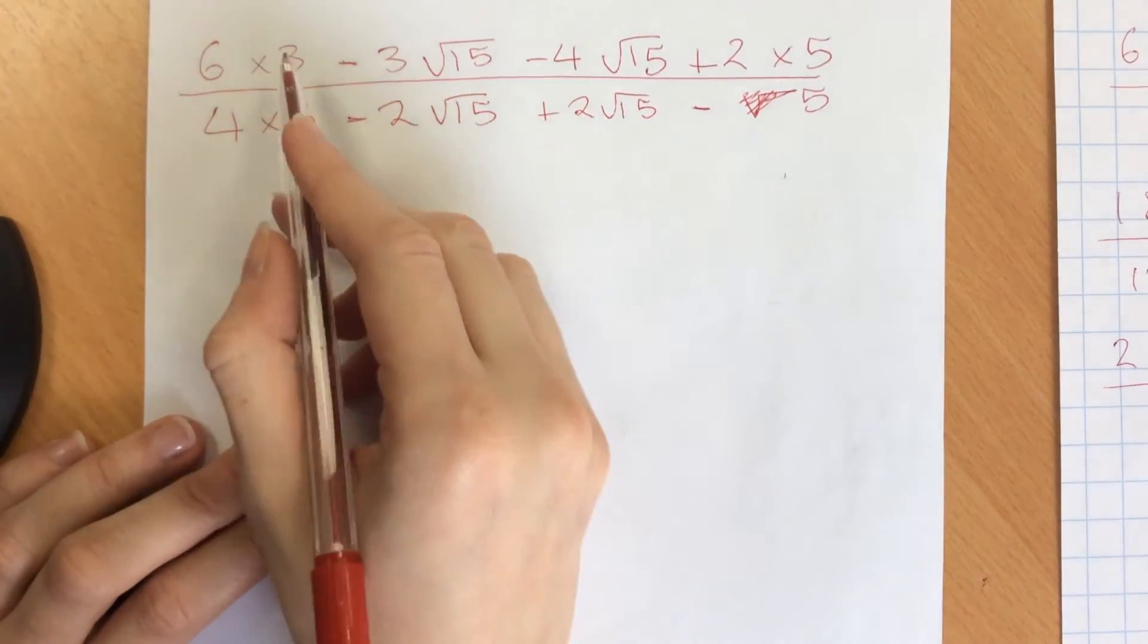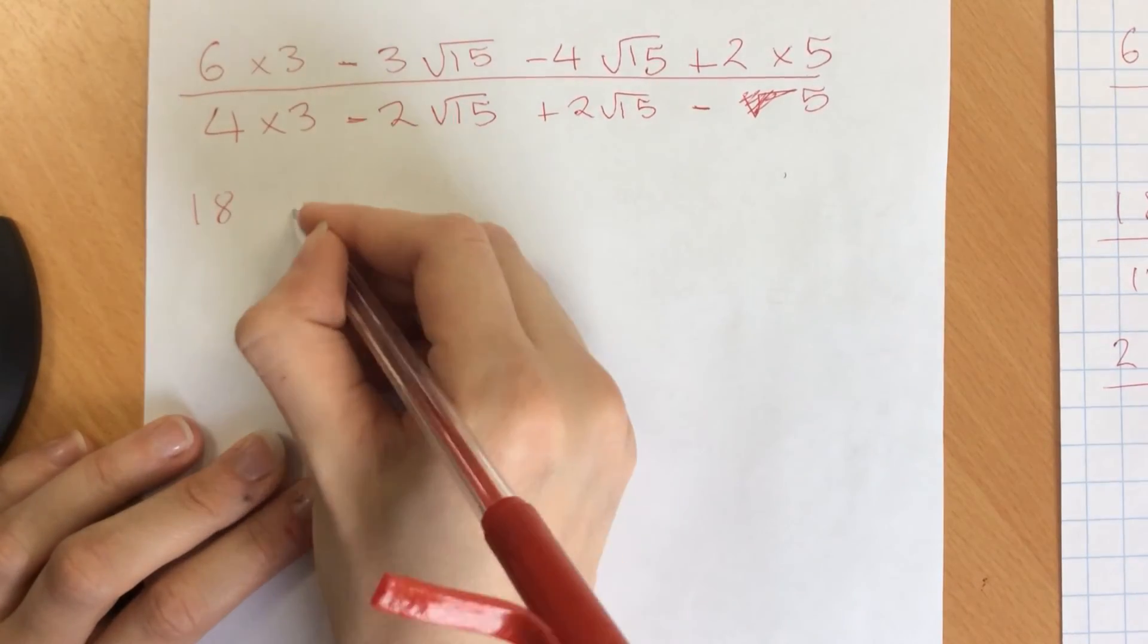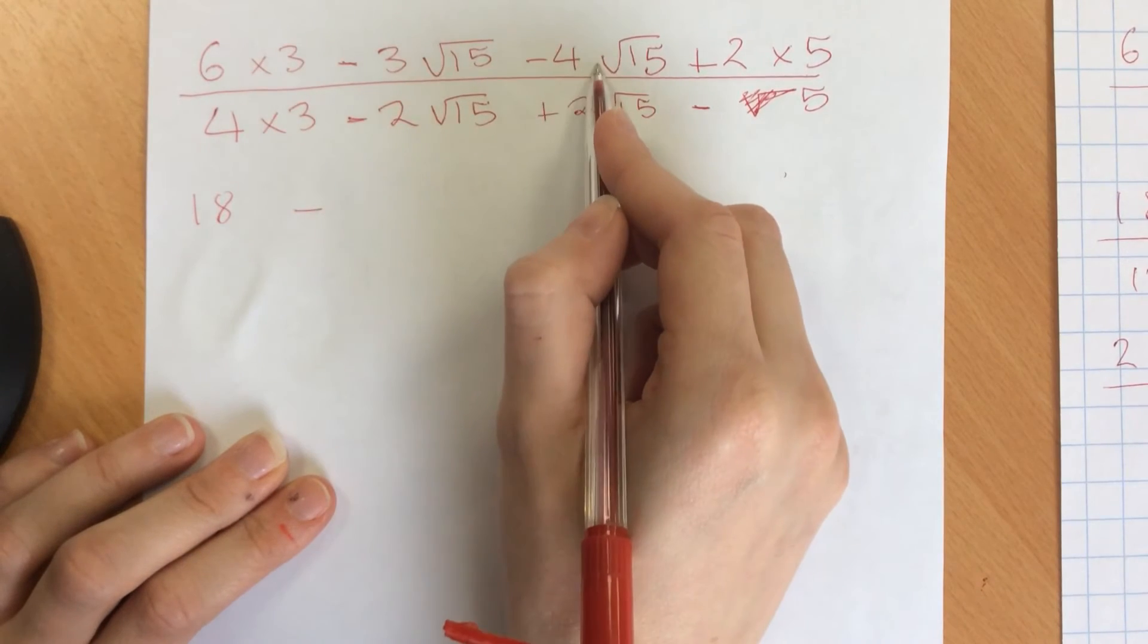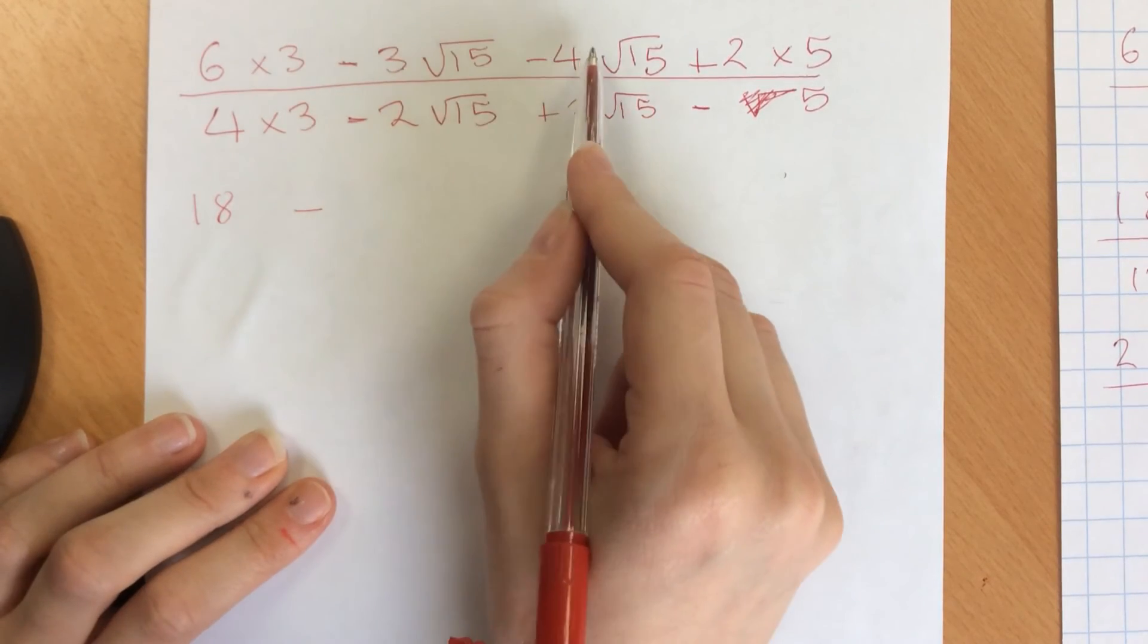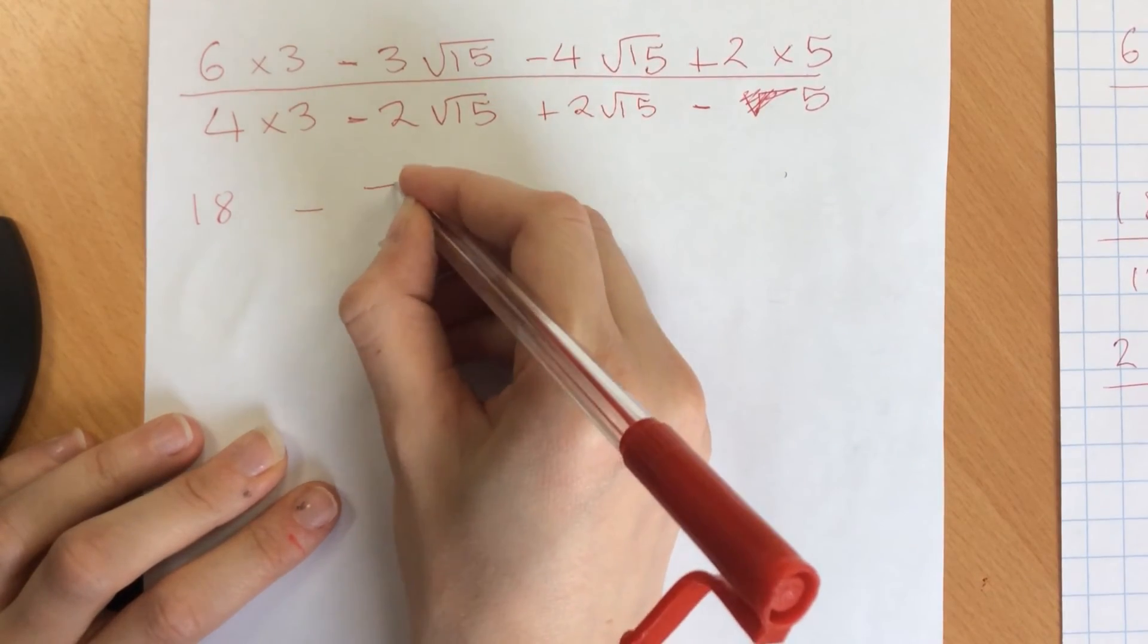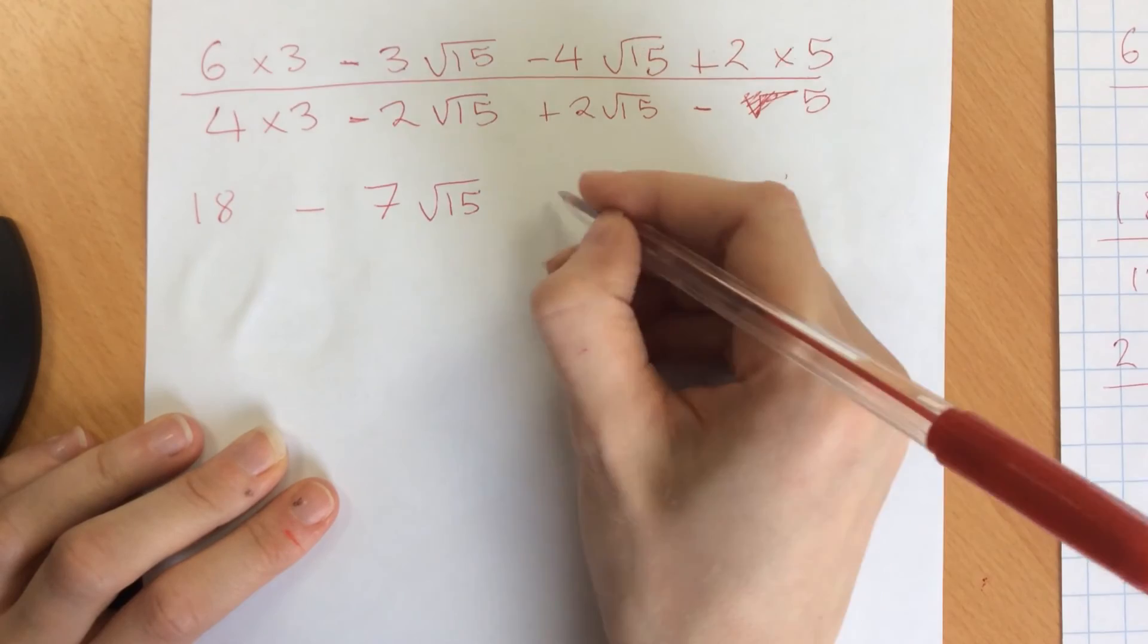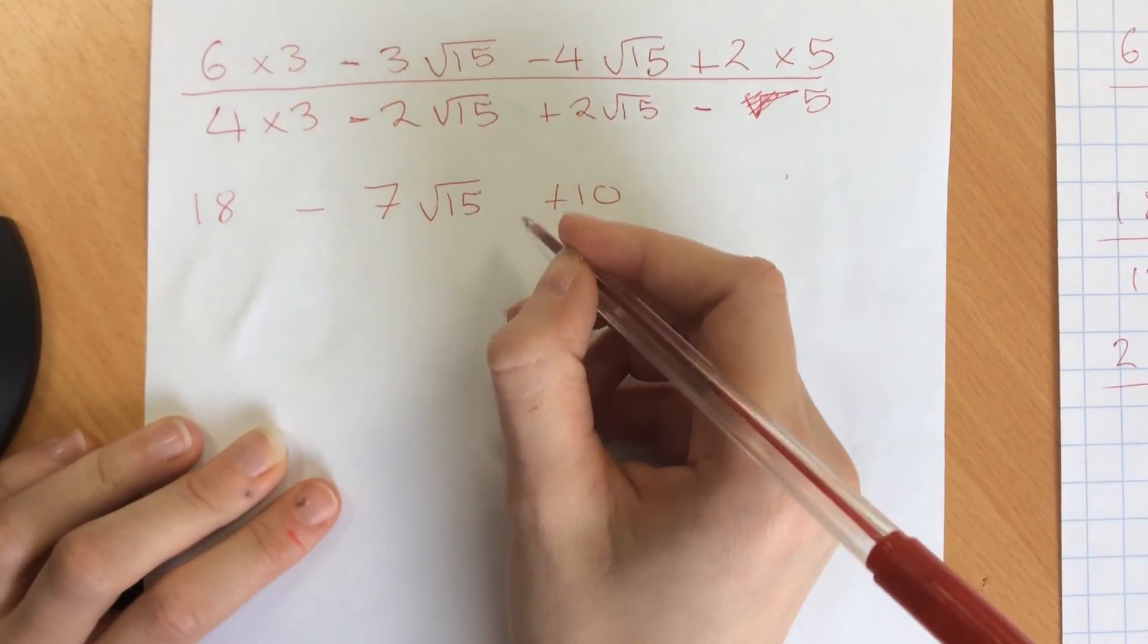Working these out then, we end up on the top here, 18 minus 3 root 15 minus 4 root 15. Thinking them like x's, so minus 3x minus 4x would give me minus 7x. So minus 7 root 15 plus 10 on the end.